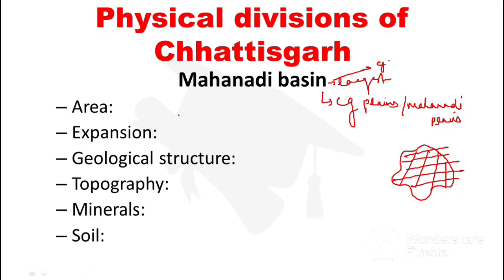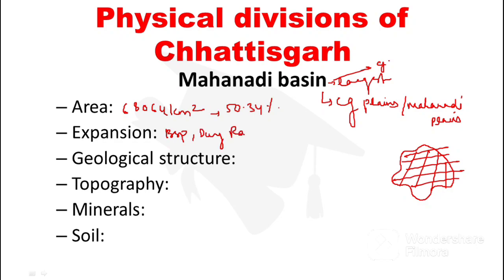The area is approximately 68,064 km², which is 50.34% of Chhattisgarh's total area. This expansion is found in Bilaspur, Durg, and Raipur Divisions — we are talking about divisions, not districts.